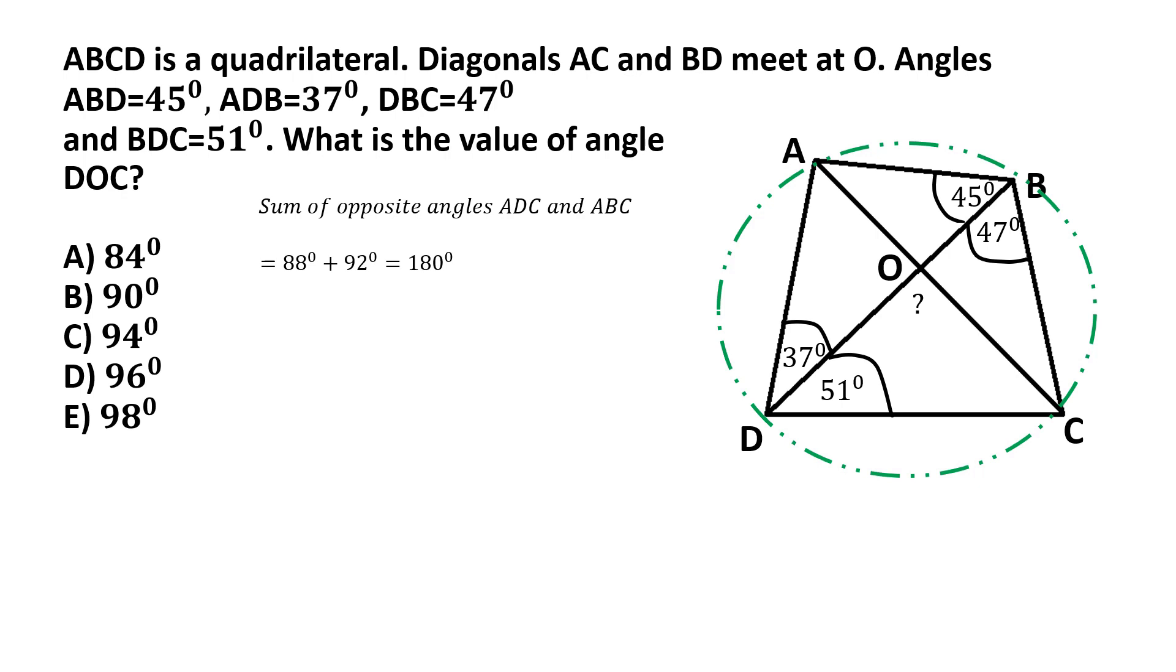And then if we consider angle DBC which is 47 degrees, indicated in red, angle DBC and angle DAC are basically angles in this circumference as subtended by the small arc DC. And so these two angles should be equal because we know that angles subtended at the circumference by the same arc of the circle would be equal. So that will make angle DAC equal to 47 degrees.